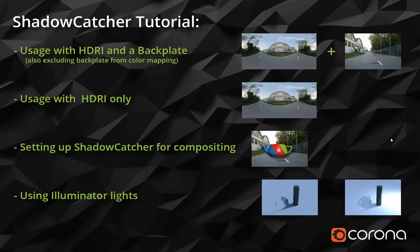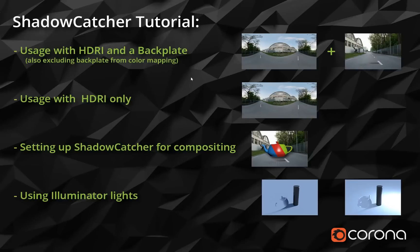The first part will be about a typical use case scenario where you have both an HDR map and a backplate, and in that part I will also be showing how to exclude the backplate from the color mapping so it remains unaffected by the color transformations. The second part will be just using an HDR map only, without the backplate — so that's another use case that we will cover.